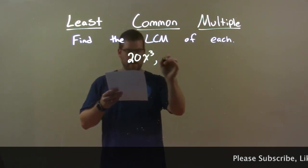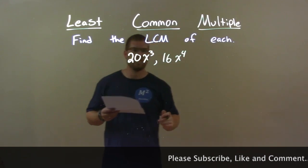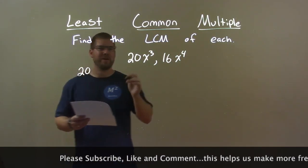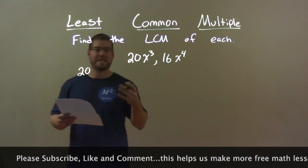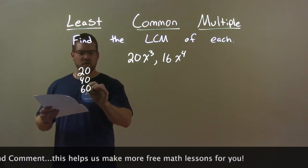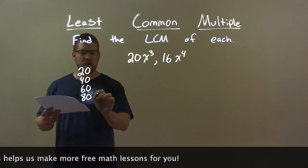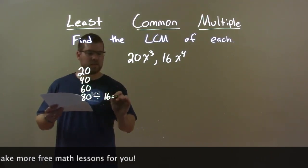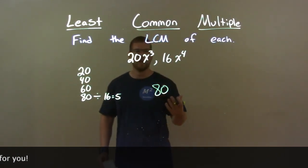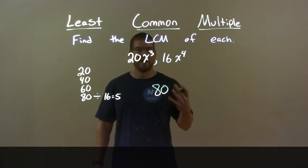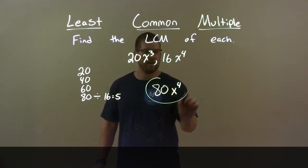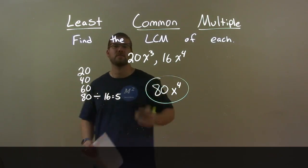20x to the third power and 16x to the fourth. First I deal with just the numbers. The largest number is 20, and I go through its multiples to see which one is divisible by 16. 20 is not, and neither is 40. 60 is also not divisible by 16, but 80 is — 80 divided by 16 gives me 5. So my number is 80. Now for the variables: I have three x's here and four x's there, so I must encompass the most — x to the fourth power. My final answer is 80x to the fourth power.